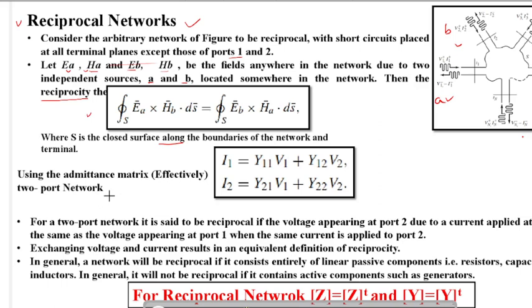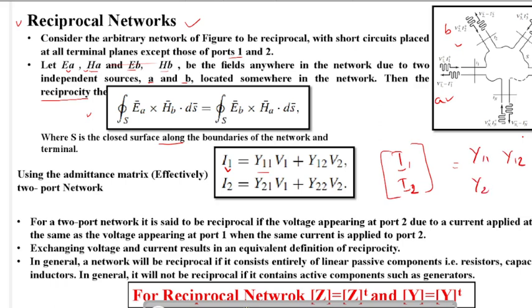Now, if we consider the admittance matrix, then I1 equals Y11 times V1 plus Y12 times V2, considering only 2 ports. And I2 equals Y21 times V1 plus Y22 times V2. In matrix form, this is written as: [I1, I2] = [Y11, Y12; Y21, Y22] times [V1, V2]. This is the admittance matrix equation.